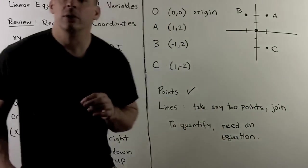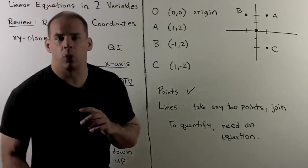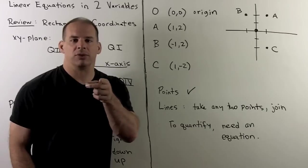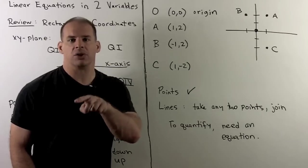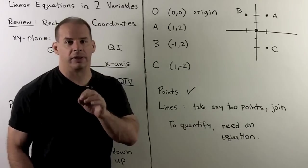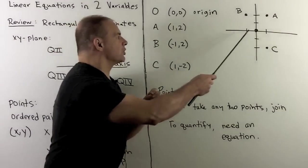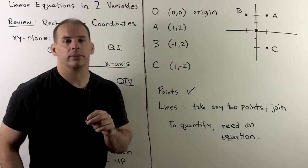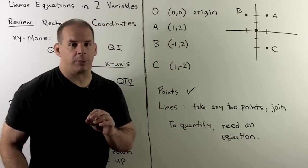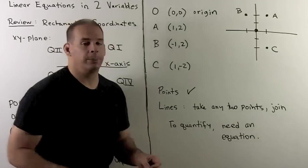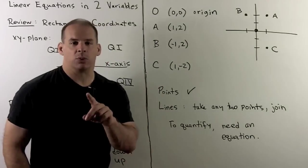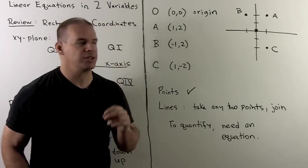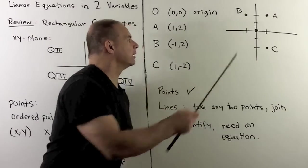If we have both coordinates equal to zero, we move left/right by zero and up/down by zero — so we do nothing. The origin is the point (0, 0). For example, the point (1, 2) means x equals 1, y equals 2: go right by 1, up by 2 to reach point A.